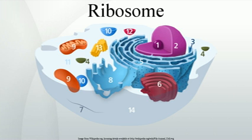The ribosome contains three RNA binding sites, designated A, P, and E. The A site binds an aminoacyl-tRNA. The P site binds a peptidyl-tRNA — a tRNA bound to the peptide being synthesized. And the E site binds a free tRNA before it exits the ribosome. Protein synthesis begins at a start codon AUG near the 5' end of the mRNA. mRNA binds to the P site of the ribosome first. The ribosome is able to identify the start codon by use of the Shine-Dalgarno sequence of the mRNA in prokaryotes and the Kozak box in eukaryotes.